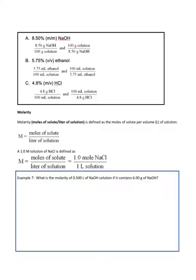This is also true for mass by volume. For a 4.8% mass-by-volume solution of hydrochloric acid, you have 4.8 grams of hydrochloric acid for every 100 total milliliters of solution, and vice versa.